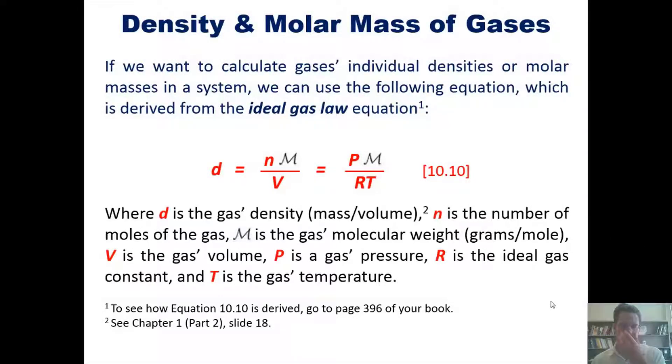In this equation, d is the gas's density, which is mass divided by volume. n is its number of moles. This fancy letter M is the gas's molecular weight in grams per mole. V is the gas's volume, P is its pressure, R is the ideal gas constant, which I talked about in an earlier video, and T is the gas's temperature.